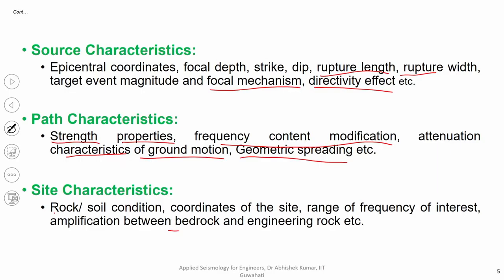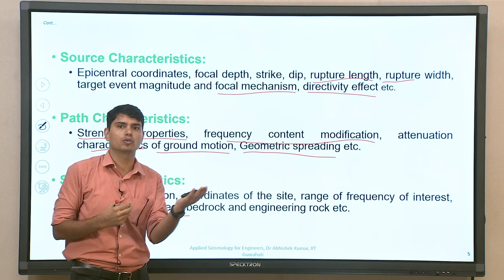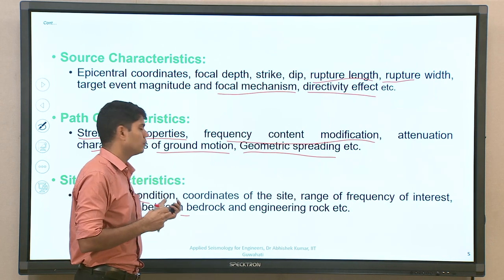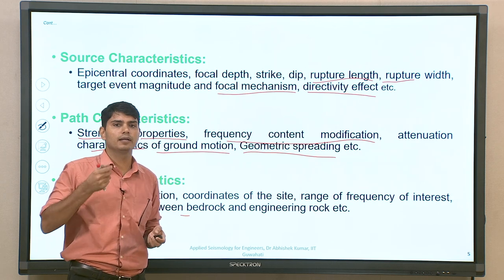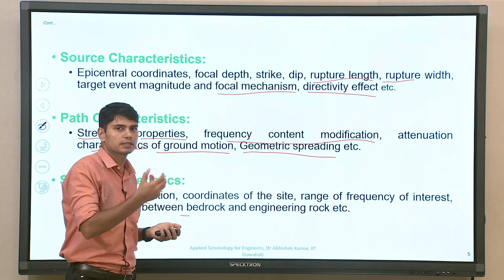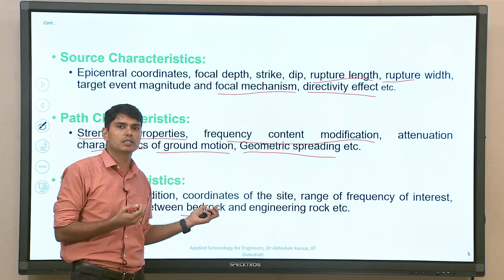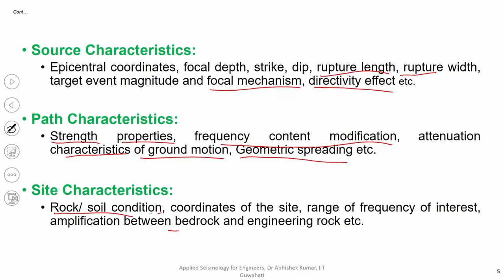Site characteristic means what is the site condition where you are interested to simulate ground motion — whether you are interested to simulate at rock medium, outcrop medium, or at different site classes such as A, B, C, D, or E. Coordinate of the site gives you the relative position of your site with respect to focus and with respect to fault orientation.